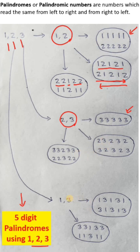And finally, if I take 1 and 3, then again I have got only the non-repetitive 4 palindromes. So overall, there are 15 such palindromes.